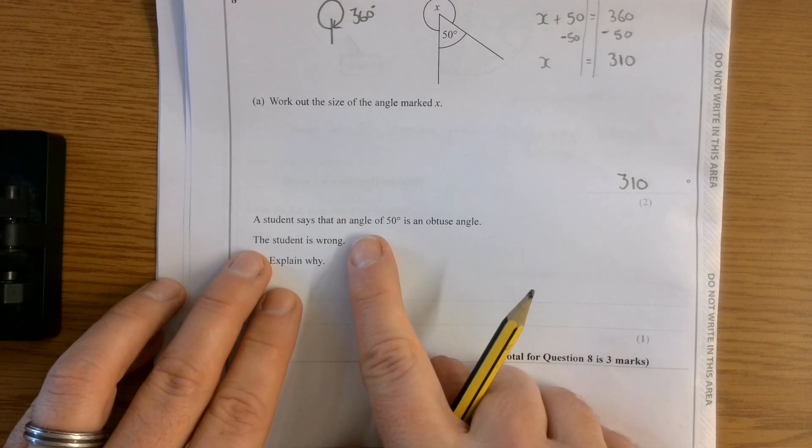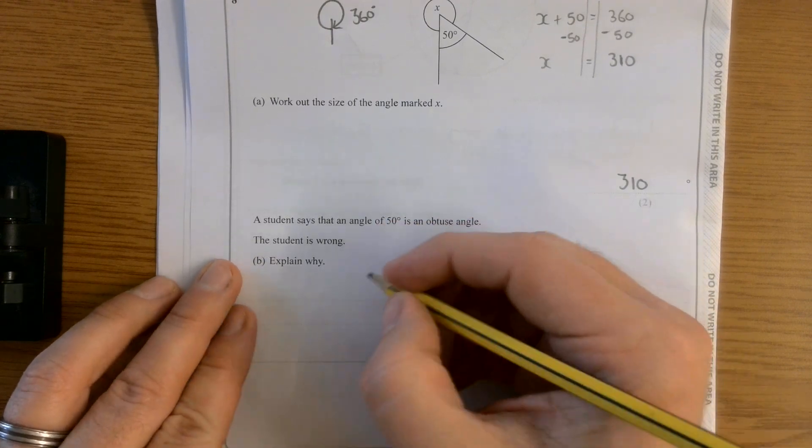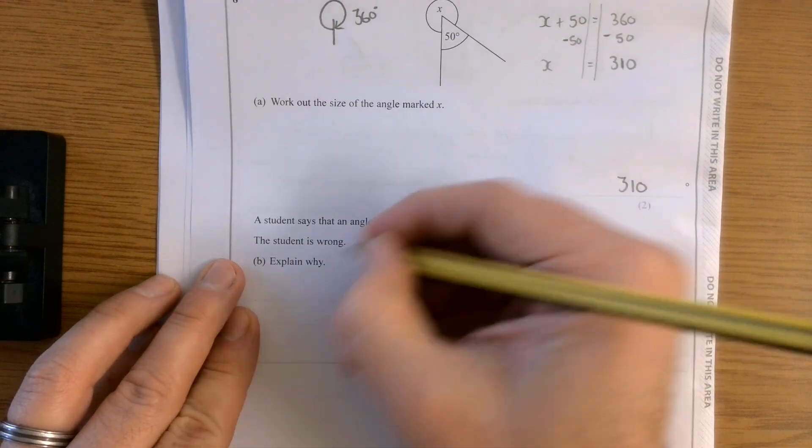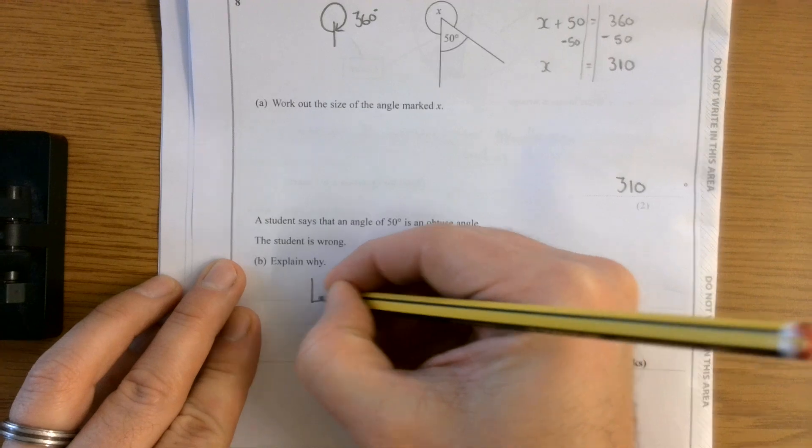A student says an angle of 50 degrees is an obtuse angle. The student is wrong. Explain why. Well, let's just draw myself a little picture. So I've got this thing here.